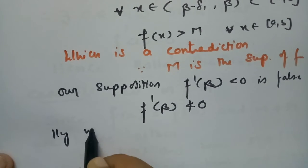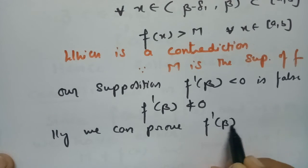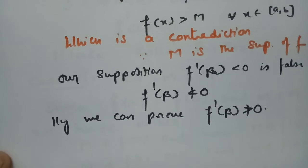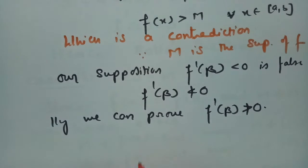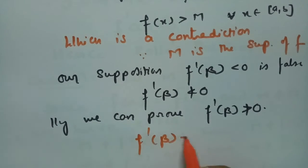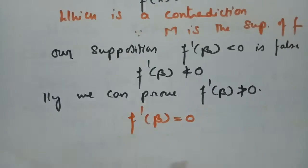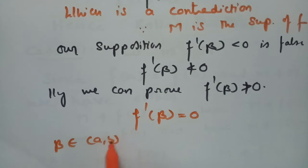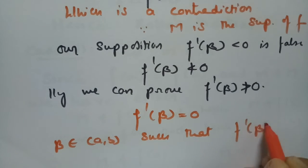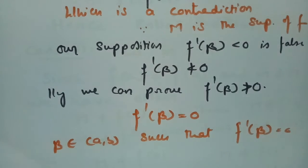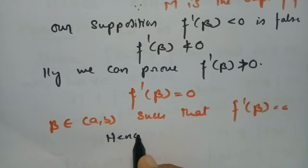Similarly we can prove f'(β) is not greater than 0. Therefore, since f'(β) is neither less than 0 nor greater than 0, by the law of trichotomy we have f'(β) = 0. Since β belongs to open (a,b) and f'(β) = 0, taking c = β, this is nothing but the Rolle's theorem, hence proved.